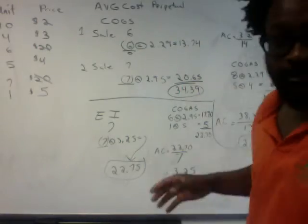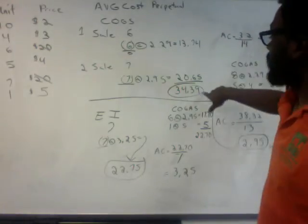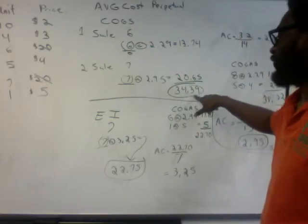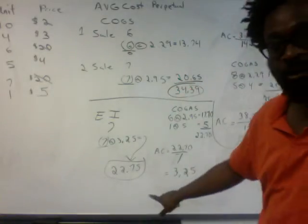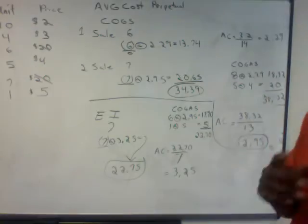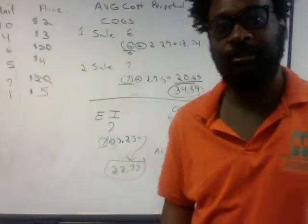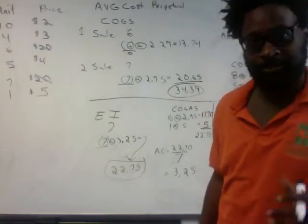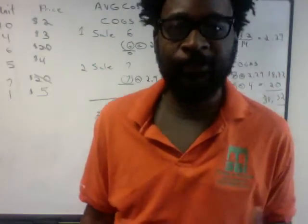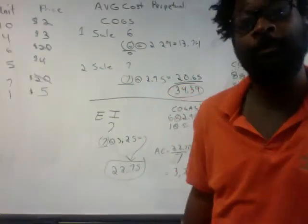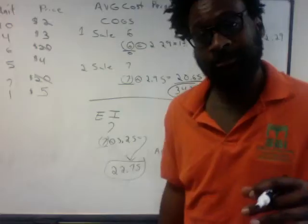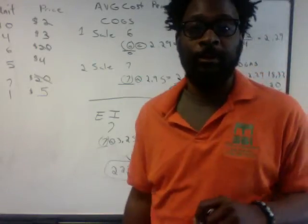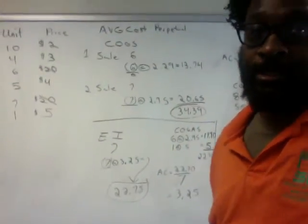To summarize our average cost method: cost of goods sold is $34.39, and the cost of our ending inventory is $22.79. Rewatch this video a few times — this is a rather difficult concept. And one of those times you're watching it, I'd like you to work the problem along with it so you can get familiar with the mechanics.